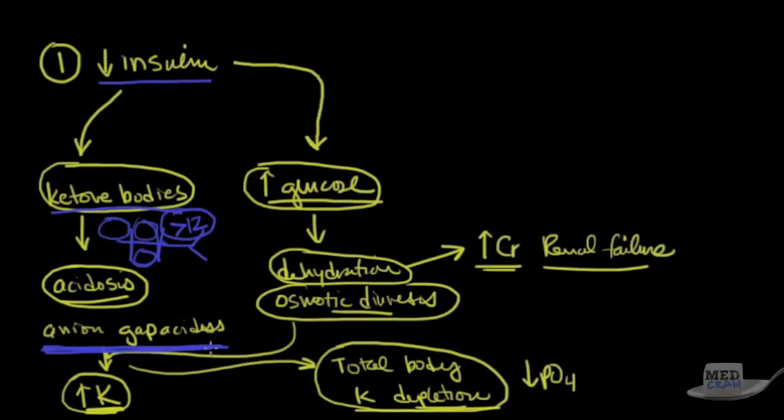And that anion gap metabolic acidosis is kind of a surrogate for how big the ketone bodies are. But you can actually measure ketone bodies. Some hospitals measure serum ketones, and some also measure something called beta-hydroxybutyrate.